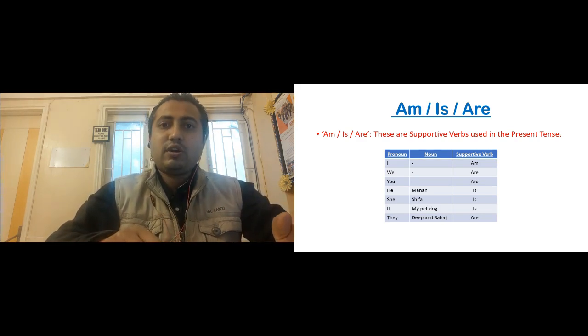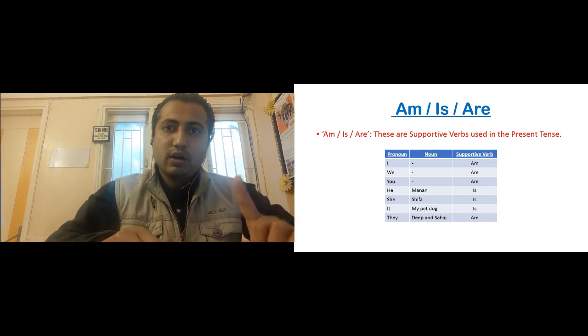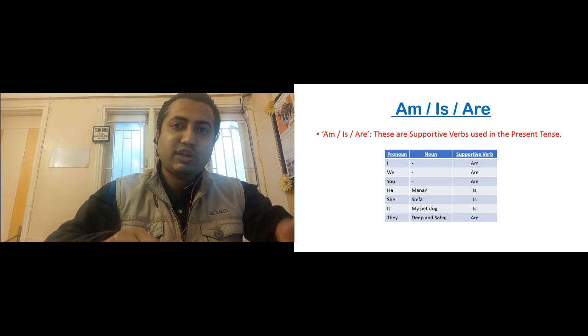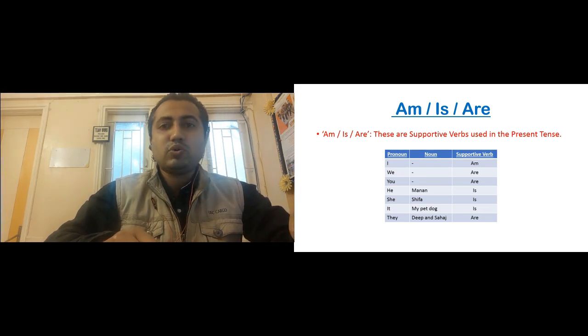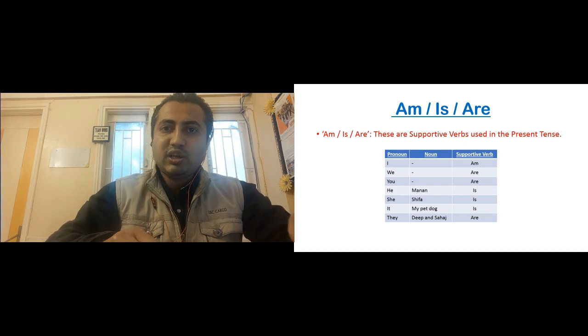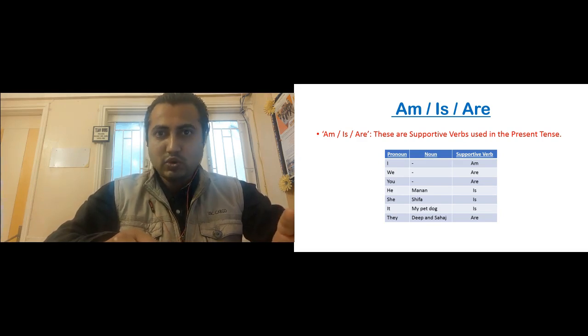Then she, or one girl, one woman's name. She, for example, a woman's name or girl's name, that is Shifa. With that also we use the supportive verb is. She is. Shifa is.